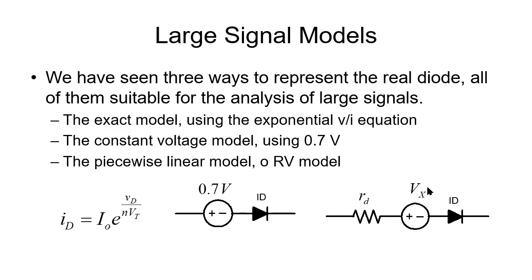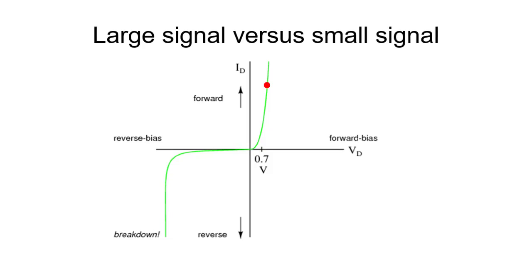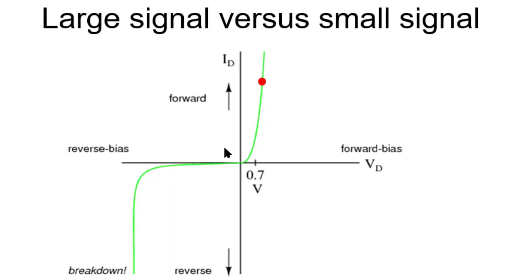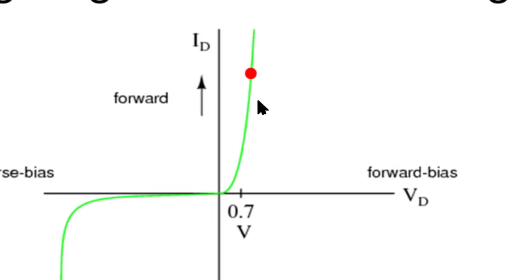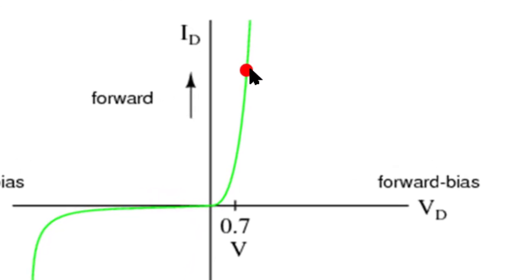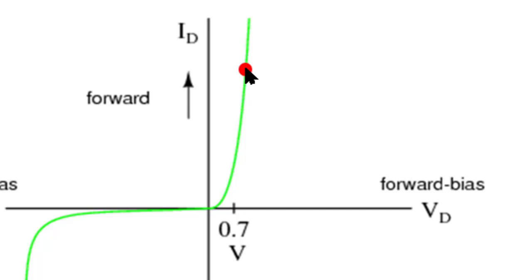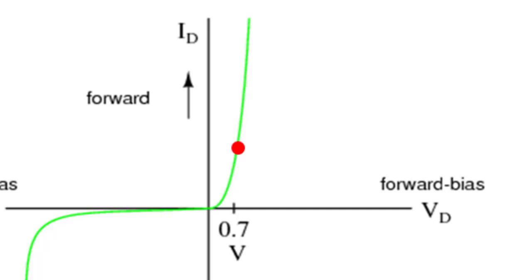I need to clarify what I mean by large signal. Look at the characteristic of the diode — the exponential one. Let's say that the point of operation for a given circuit is this red dot. That tells us the current and voltage in the diode. When the input signal makes the operating point travel back and forth between the forward and reverse biased zones, we call that a large signal.